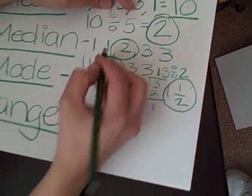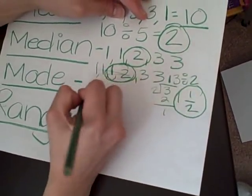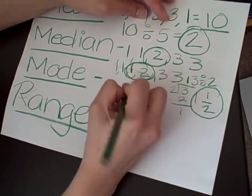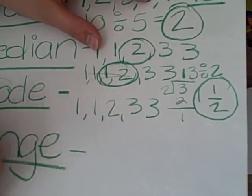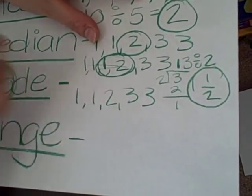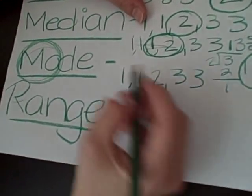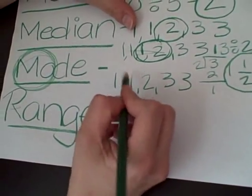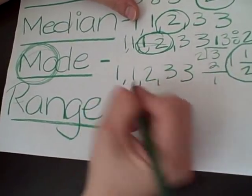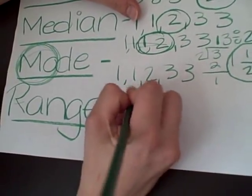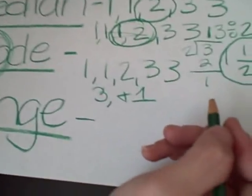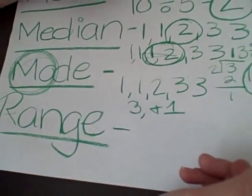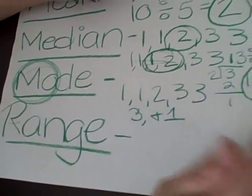Now, mode. Let's rewrite it again: one, one, two, three, three. Mode is the number that occurs the most. One appears twice, and three appears twice. So your mode is going to be three and one. You might not have a mode sometimes, and you might have more than one mode, or you might just have one.